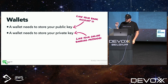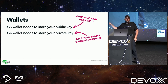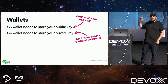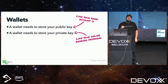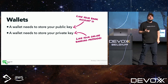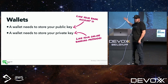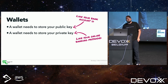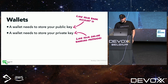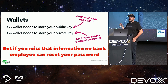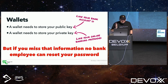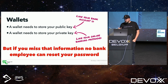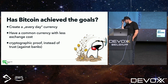Your public key is like your bank account ID — public, and visible to everyone. Your private key is like your online banking password — you need it to create transactions. The critical difference from online banking: if you lose your private key, there's no bank employee who can reset it. Your money is simply gone.